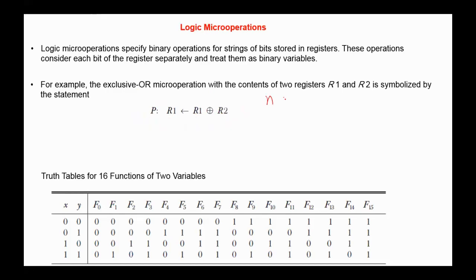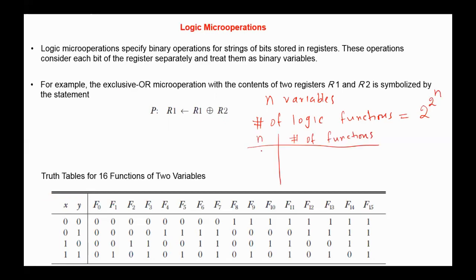If we have N variables, the number of logic functions equals 2 to the power 2 to the power N. For example, if N equals 2, then the number of functions equals 16. For three variables, we can generate 256 different functions. For four variables, the number of functions equals 65,536 different functions.